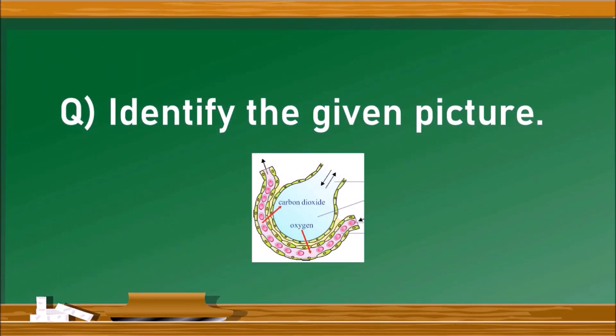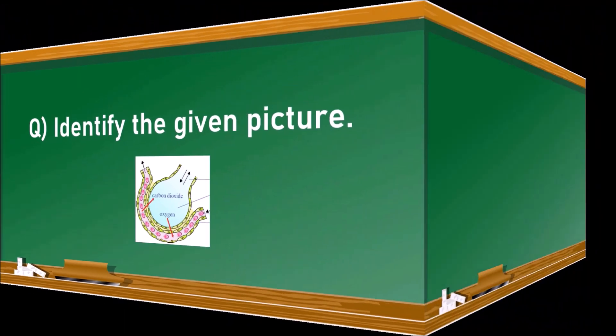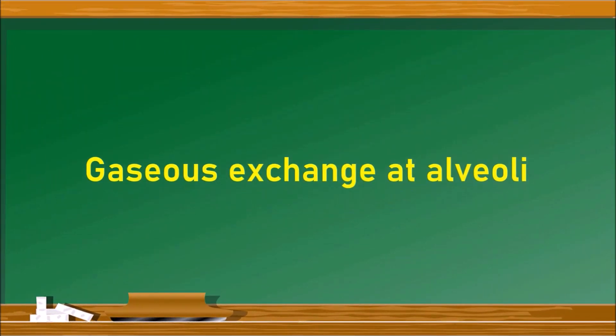Identify the given picture. The picture shows gaseous exchange at the alveoli. Alveoli are the tiny sac-like units of the lungs where gaseous exchange takes place.